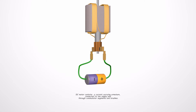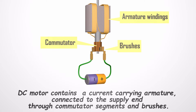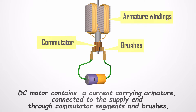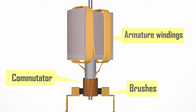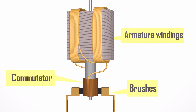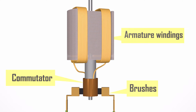The very basic construction of a DC motor contains a current-carrying armature connected to the supply end through commutator segments and brushes. The armature rotates with the commutators, while the brushes stand still touching the commutators.